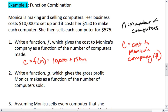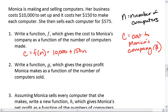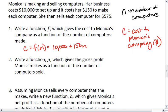All right, we then want to write a function g, which gives the gross profit Monica makes as a function of the number of computers sold. So gross profit is how much money she receives from customers without taking into account how much money she puts in herself.